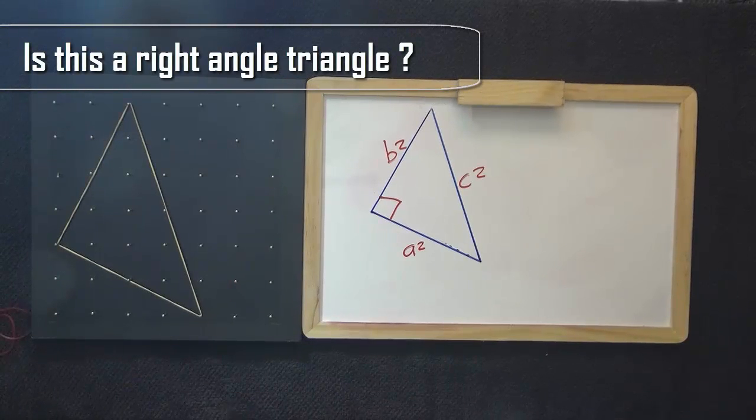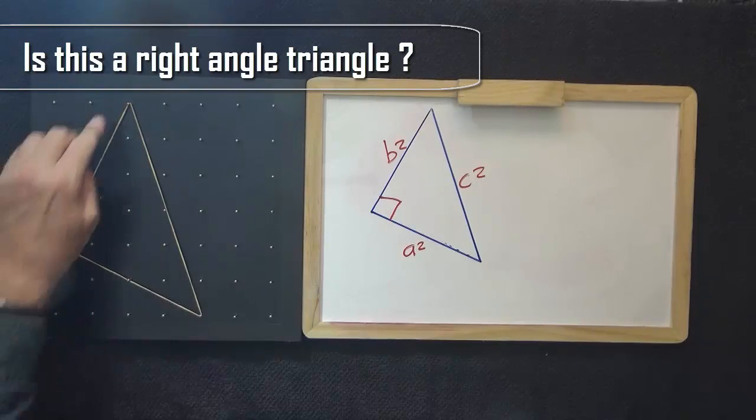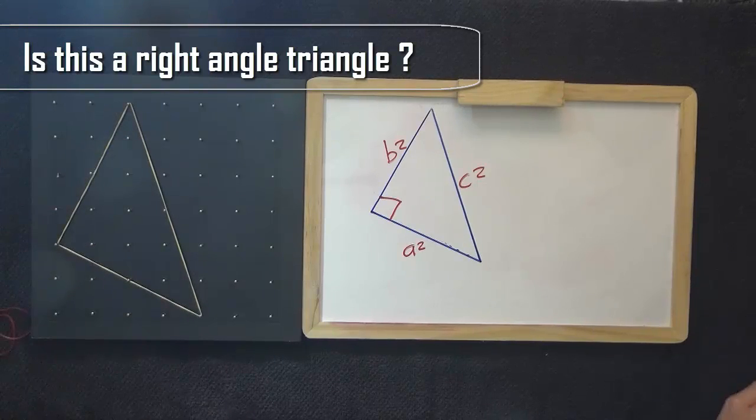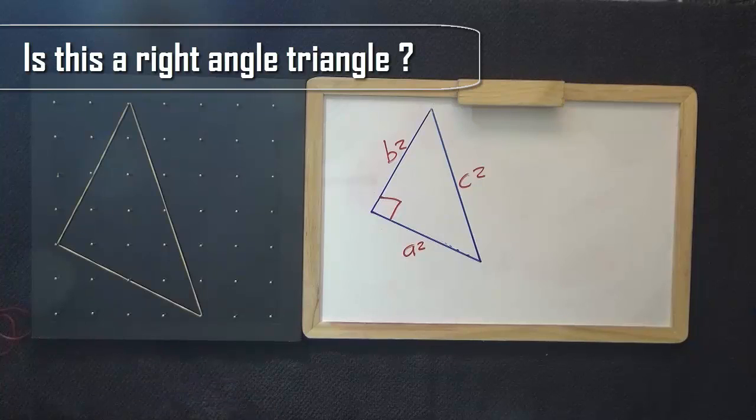We can work this out by first establishing what is the length of each of these sides. So for the longest side here, I'm going to make a triangle.